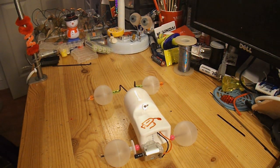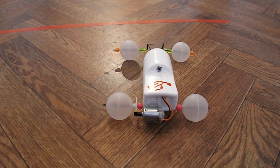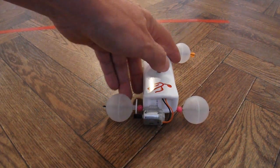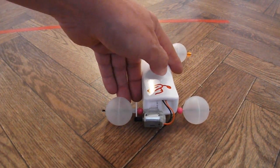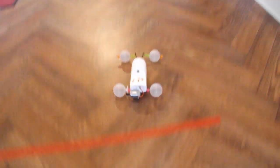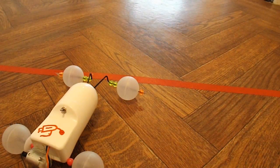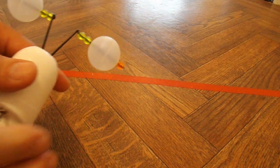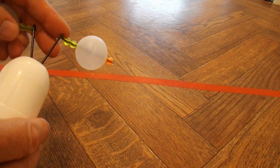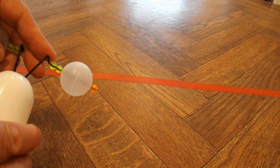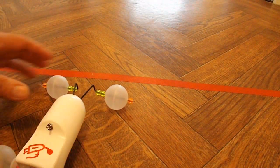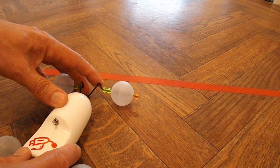I suppose I ought to give it a test run in the kitchen. Quick test run in the kitchen. Got a bit of a right turn on it. Well, the steering is easily adjustable just by bending this at the front. So let's give it a bit of a left turn instead.